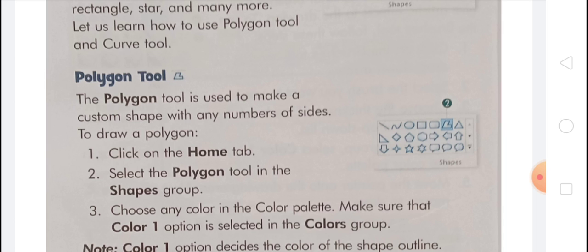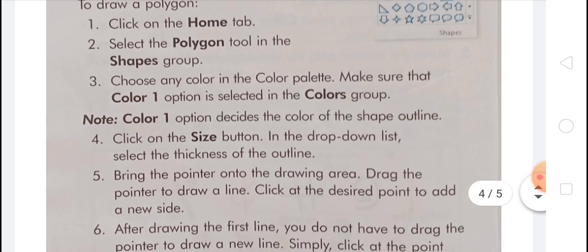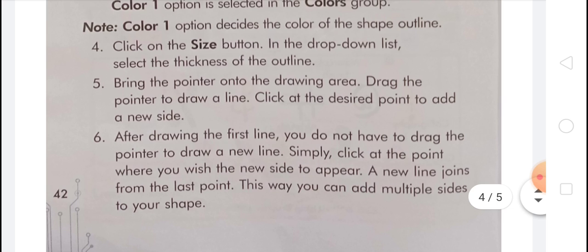Fourth, click on the size button in the drop-down list and select the thickness of the outline. Fifth, bring the pointer onto the drawing area and drag the pointer to draw a line; click at the desired point to add a new side. Sixth, after drawing the first line, you do not have to drag the pointer to draw a new line — simply click at the point where you wish the new side to appear. A new line joins from the last point, and this way you can add multiple sides to your shape.